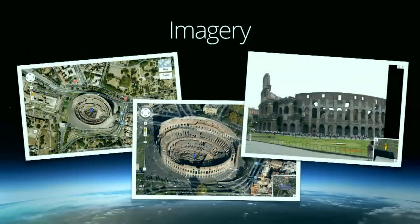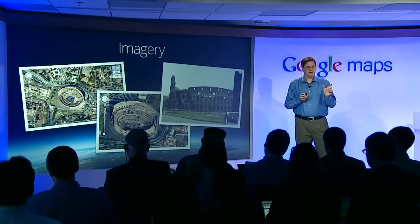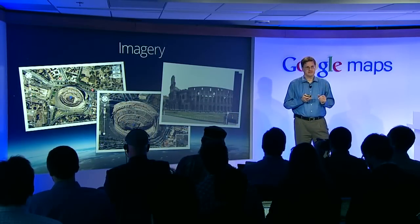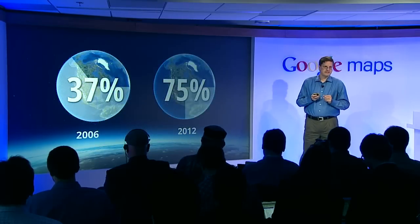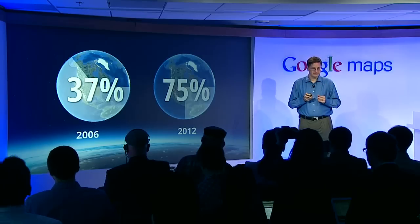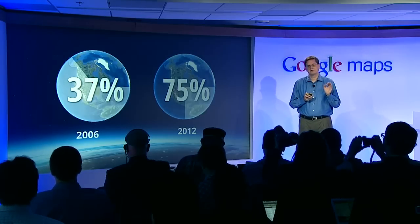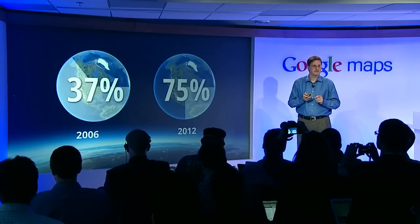But on the imagery side, things continued. In 2006, after we had launched Google Earth, we had much of the imagery that Larry had bought from Digital Globe. But today, that same amount of data is launched every two weeks onto both Google Earth and Google Maps. In 2006, 37% of the world was covered with high-resolution imagery. And today, 75% of all people in the world can see their house in high resolution.